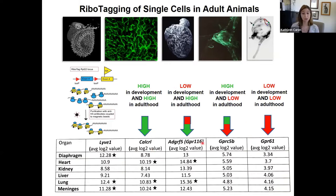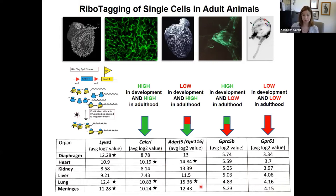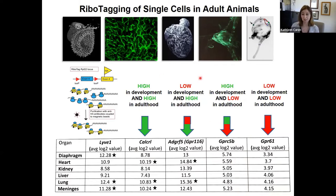Looking at the orphan receptors: GPR116, which was expressed rather low in development by RNA scope, showed very high expression in adult tissues — even higher than CLR in the heart and lung — suggesting future studies in adult tissues would be warranted. For GPRC5b, though high in embryonic development by RNA scope, it is actually low in lymphatic endothelial cells in adult tissues. GPR61 was lowly expressed both in development and adulthood. We've focused our attention on GPR116 in adult tissues and GPRC5b in both development and adult tissues.